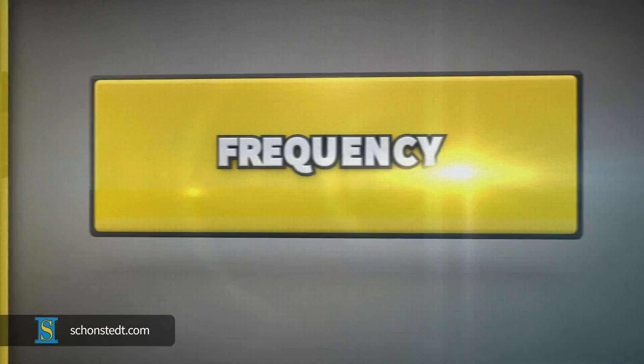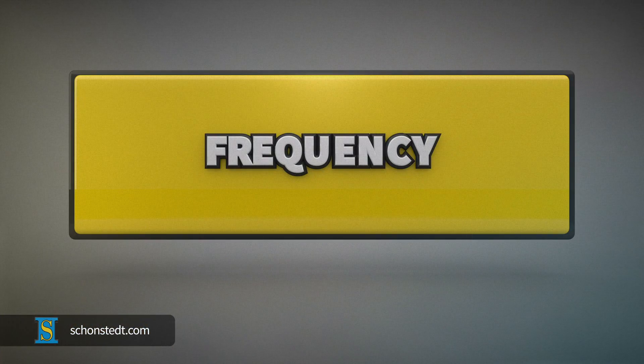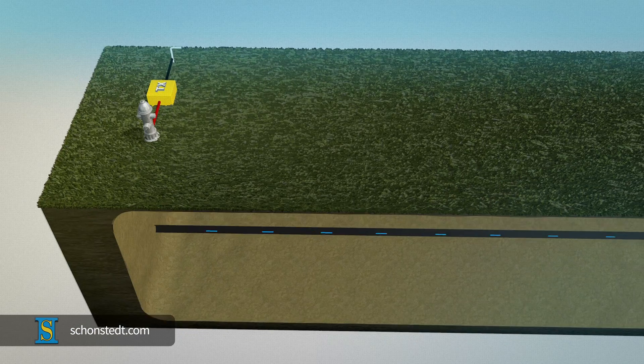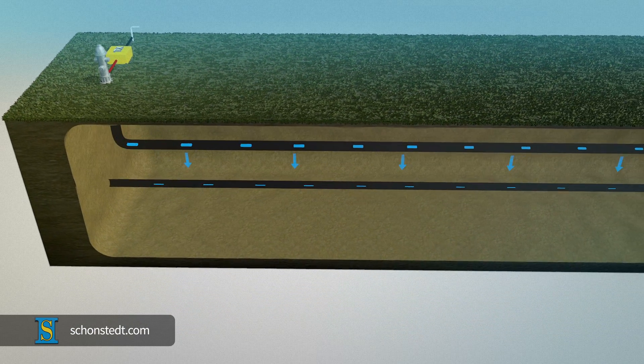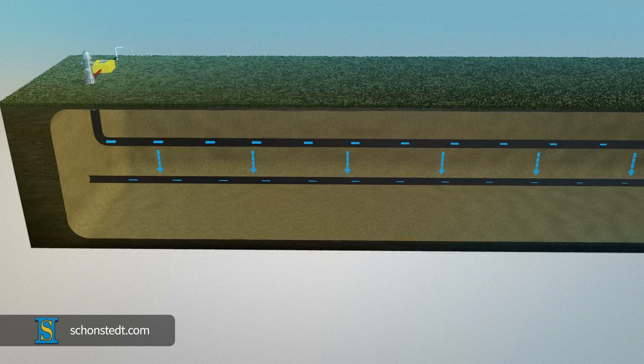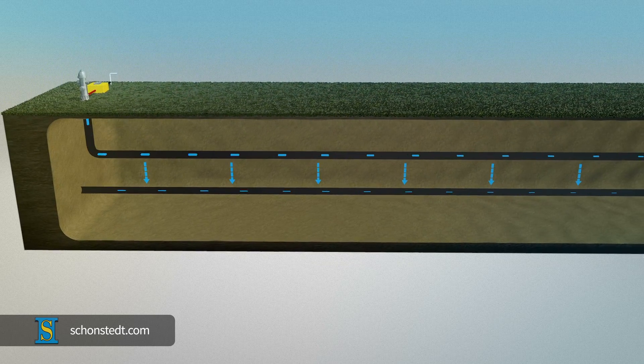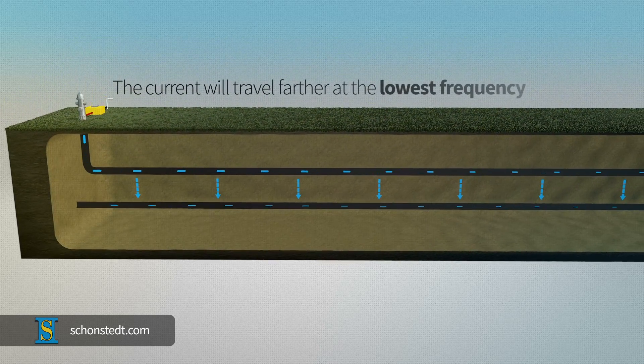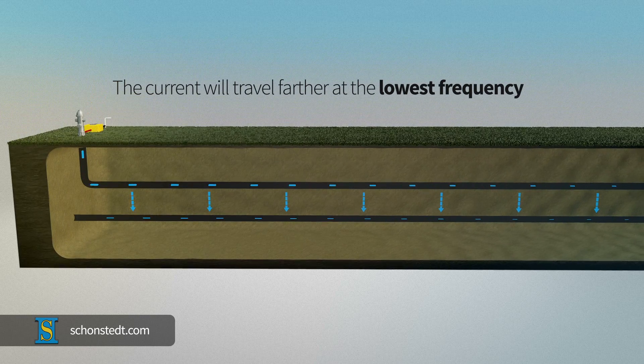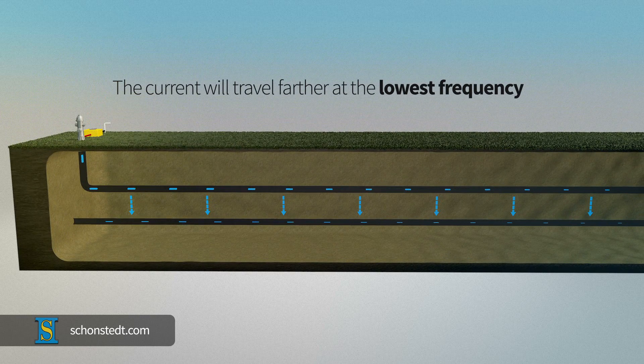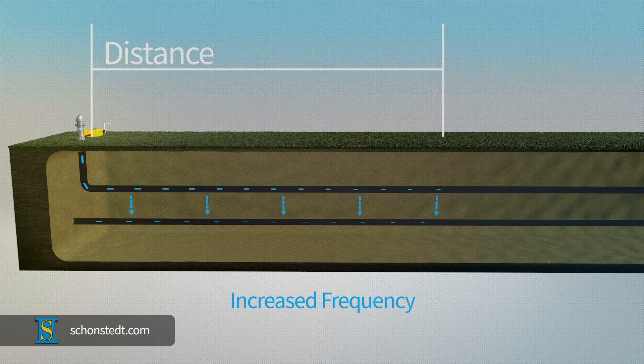One of the keys to getting a good signal is applying the proper frequency. If conditions are good – good conductor, connections, and soil conditions – the current will travel farther at the lowest frequency with less leakage to adjacent structures. An increase in frequency will cause the signal to leak sooner and cover less distance.